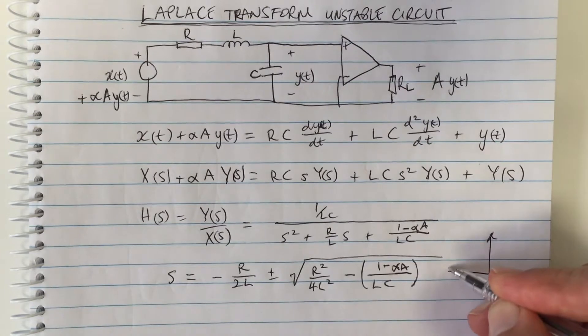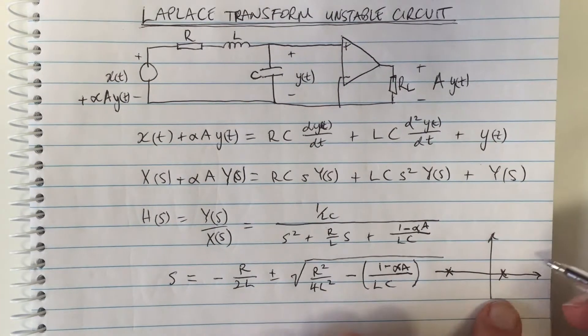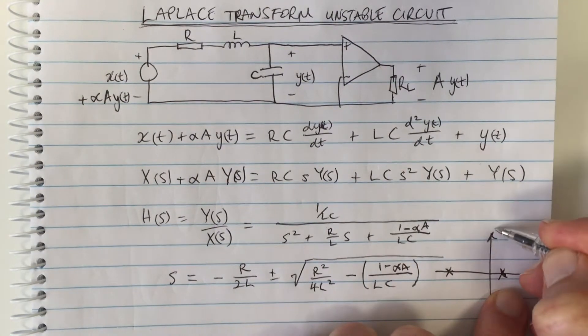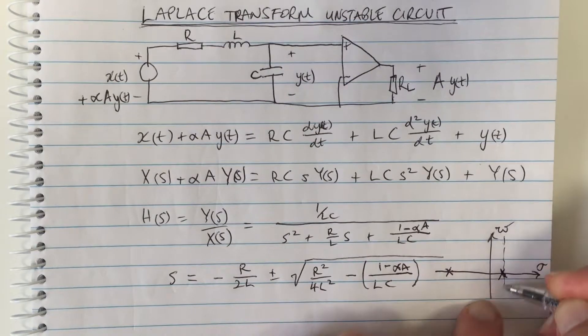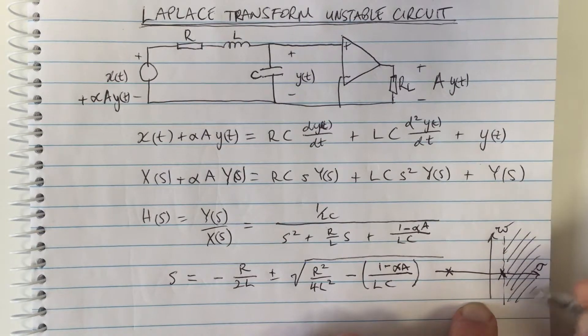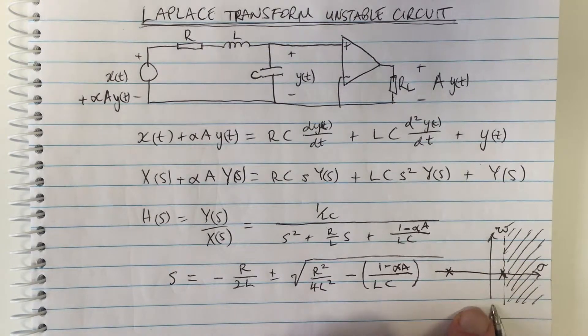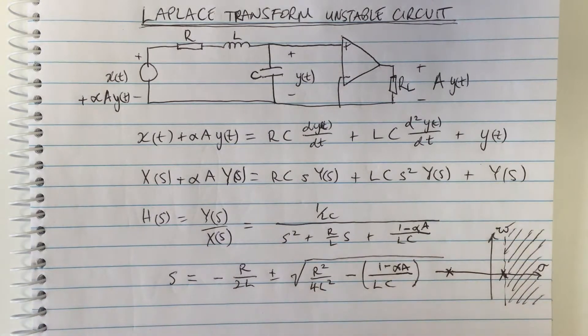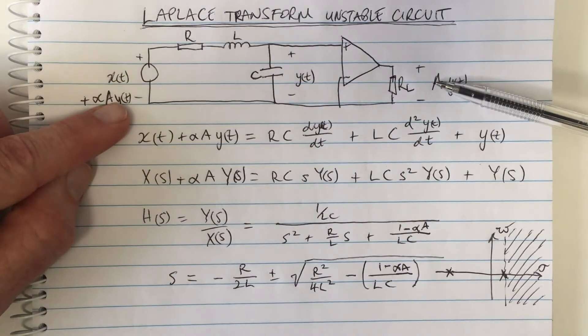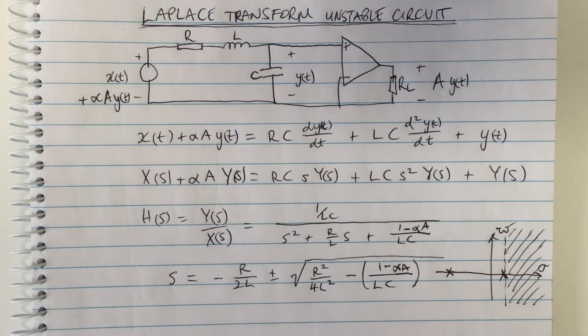Because we know it's a causal system, our region of convergence with a positive pole means the region of convergence is a right-hand half plane. That means our region of convergence does not include the j omega axis, which means it's not stable. This is the positive feedback and that sound that you get when a microphone gets too close to a speaker and the sound keeps amplifying and amplifying. It's an unstable system.